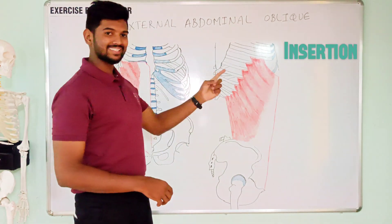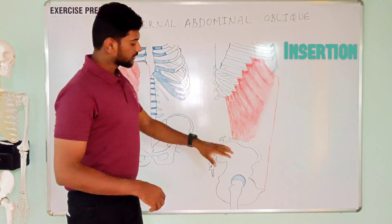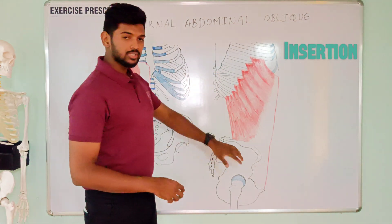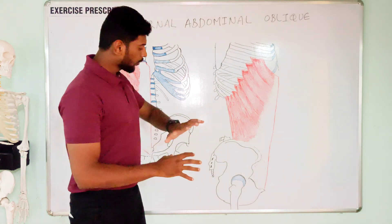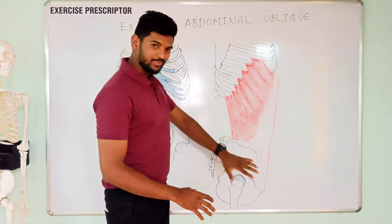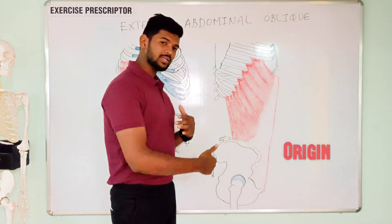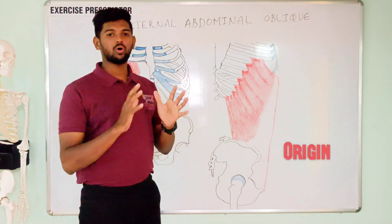So the proximal attachment is called the insertion. The distal attachment is the less mobile, more fixed attachment, so the distal attachment is called the origin.